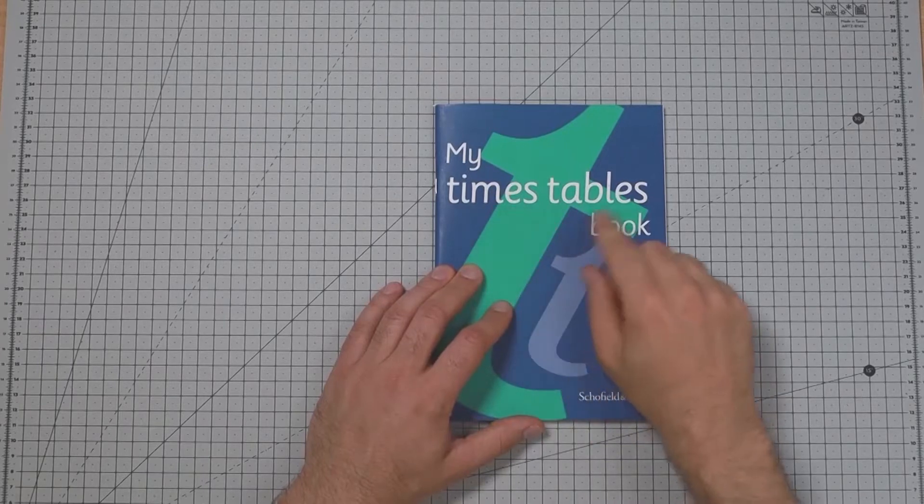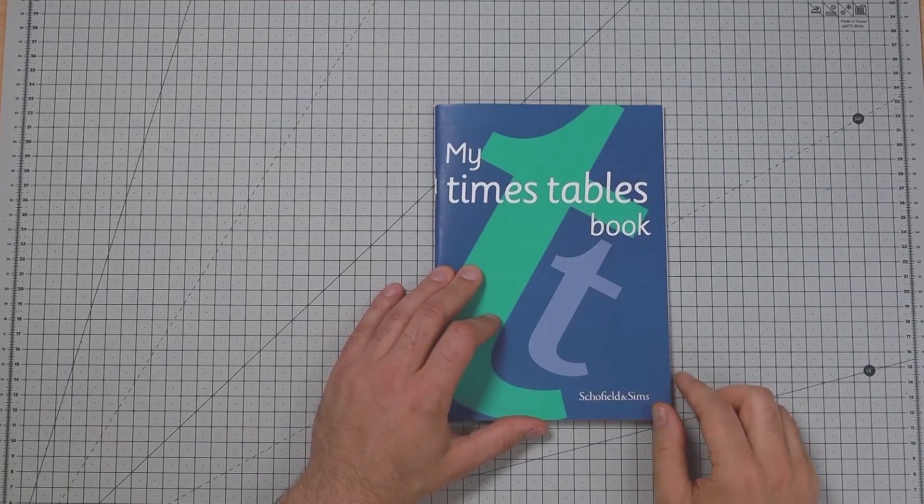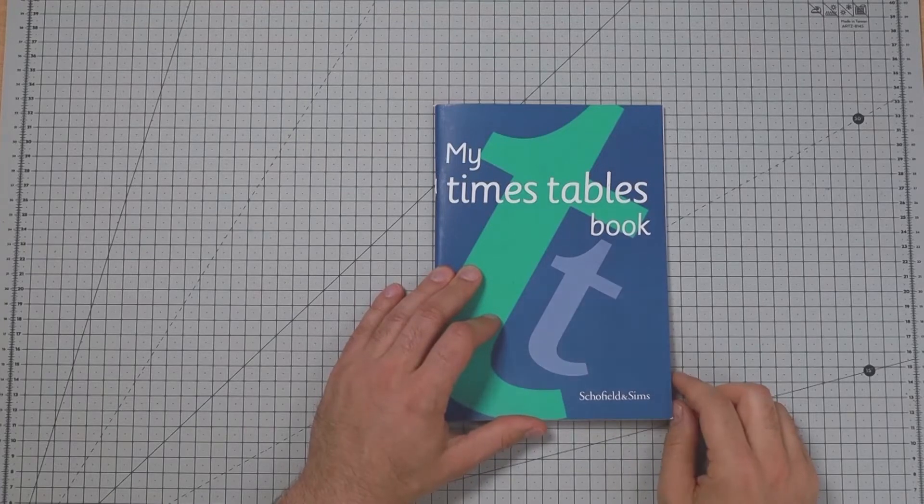Schofield and Sims My Times Tables Book. A5 size, for half a pint. This is Books for Donkeys, will be done in a minute.